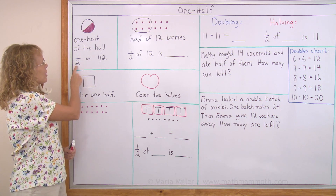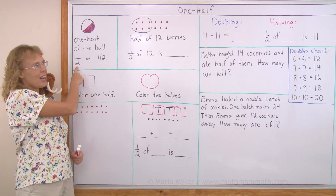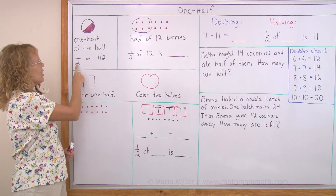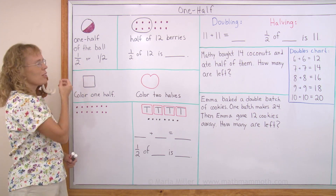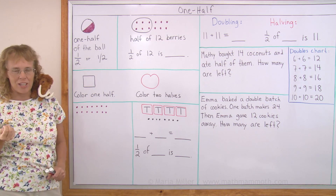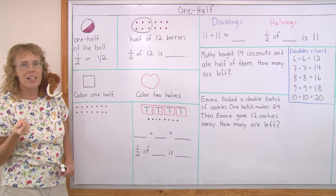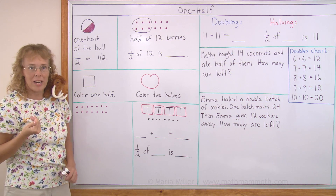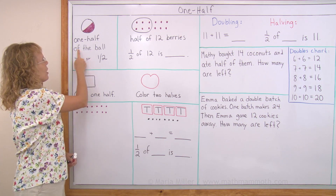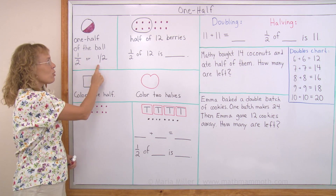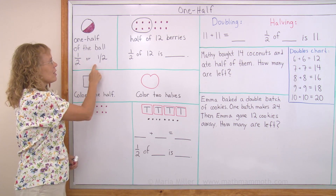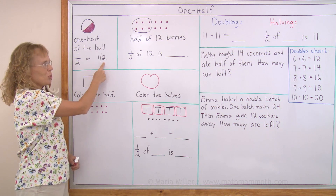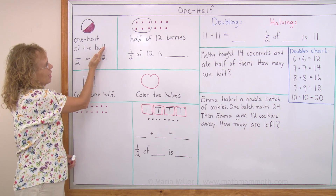And this is how we write one half. One, then a line, and a two. The two comes from the fact that we have divided something into two equal parts. So this is one half and it can also be written like this: one, a line, and a two — it's actually a slash.